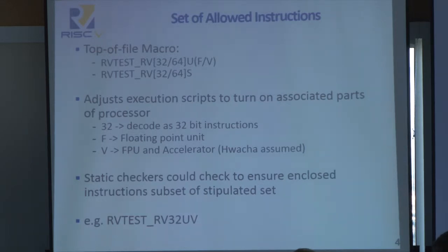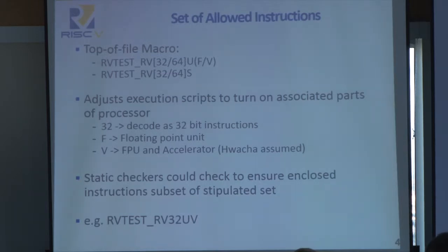The idea is that when you are writing your test, you will include the smallest amount of instructions possible in order to keep the test as general as possible. For example, if you're not using the vector unit or floating point unit in the assembly test that you are writing, you will not want to turn on those devices in order to keep the test run simple. Future work we're looking at is incorporating a static checker into your assembly test building suite that would verify all the emitted instructions based on what the top of file macro was, ensuring you're not emitting any extraneous instructions.